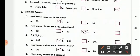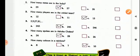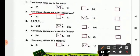Now number game, how many states are in India, it is 29, A part is correct. Then how many players are there in a cricket team, B part is correct, 11.